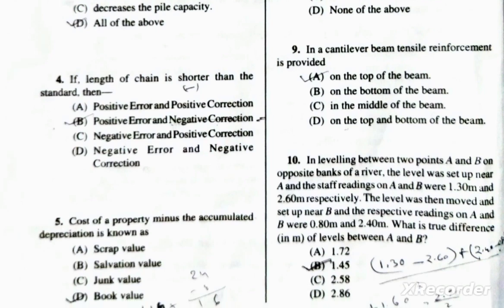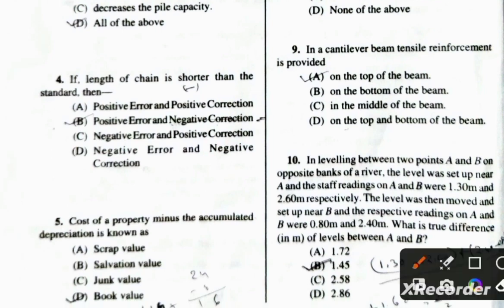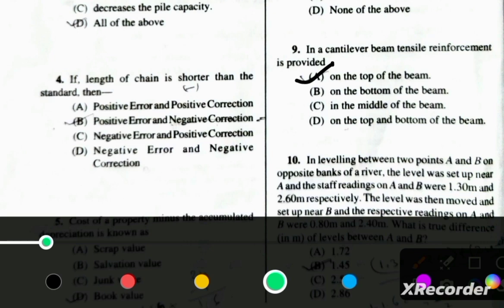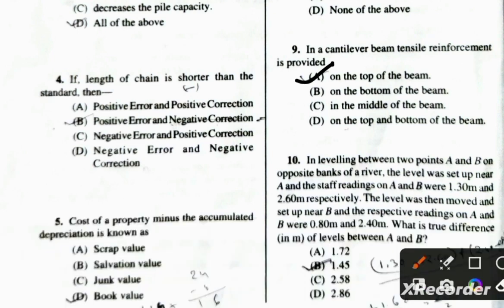In a cantilever beam, the tensile reinforcement is provided at the top of the beam. This is because the bending moment in a cantilever beam causes tension at the top fiber.